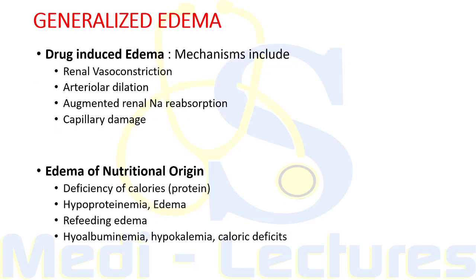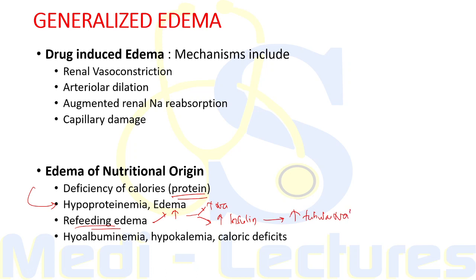Edema of nutritional origin occurs when a diet is grossly deficient in calories, particularly protein, over a prolonged period, producing hypoproteinemia and edema. Refeeding edema occurs when edema intensifies after subjects are provided with adequate diet — due to increased sodium ingestion and reabsorption in the kidney, as well as increased insulin release after refeeding, which augments tubular sodium reabsorption. In addition, hypoalbuminemia, hypokalemia, and caloric deficits may be involved in the edema of starvation.